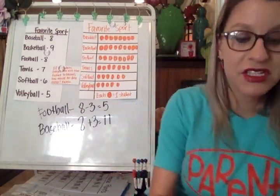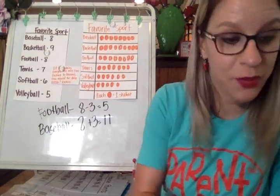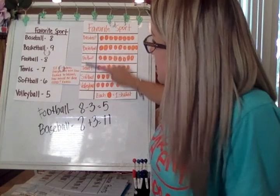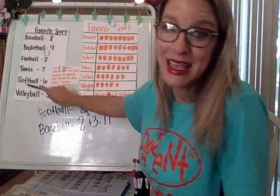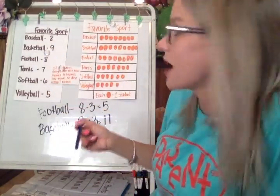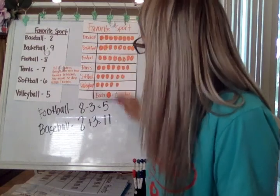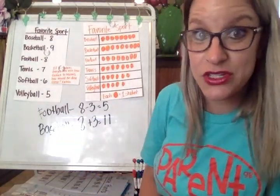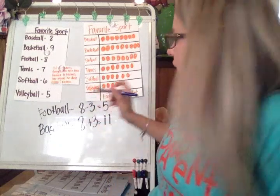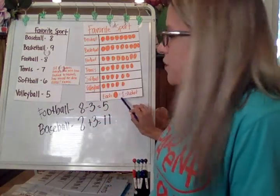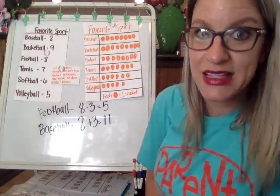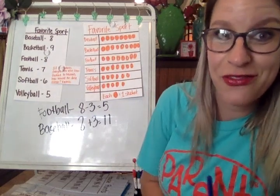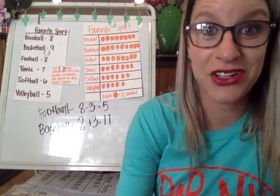This is essentially how you work on a picture graph. Remember the key things you have to have: your title, your categories in the same order from your data collection, and your symbol. Choose a symbol that's easy to draw and recreate, and make sure you have what it represents. That's how you're going to be successful on your math for today and your picture graphs.